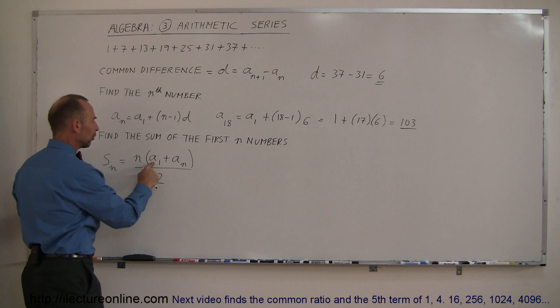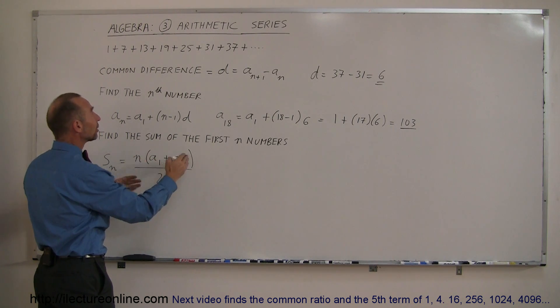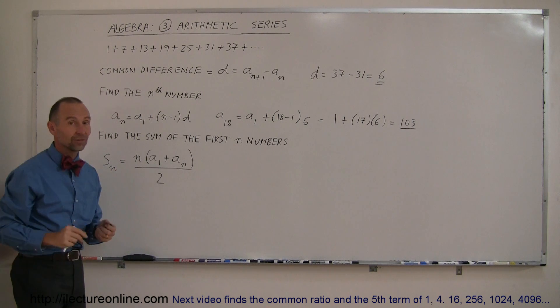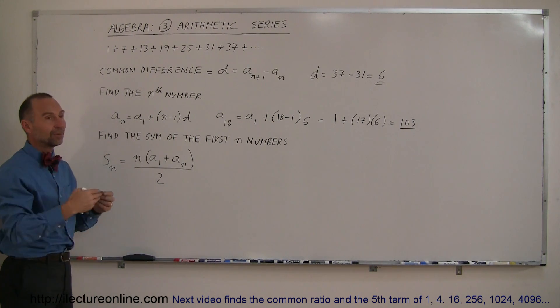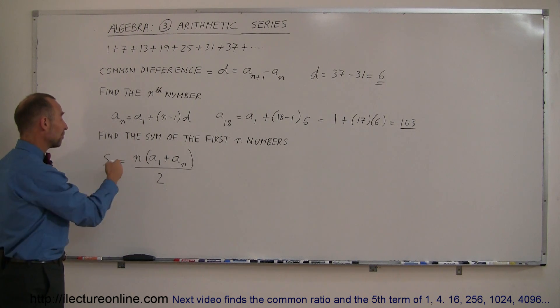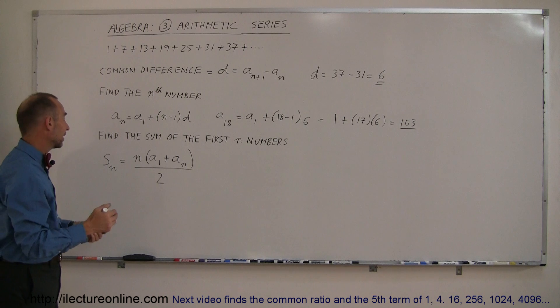Now if you think about it, the first one plus the last one, added together, divided by 2 is the average value of all the numbers in the sequence, from the first one to the nth one, and if you multiply it times n, you simply say I take the average value times however many I have, and that should give me the sum, which is of course correct.